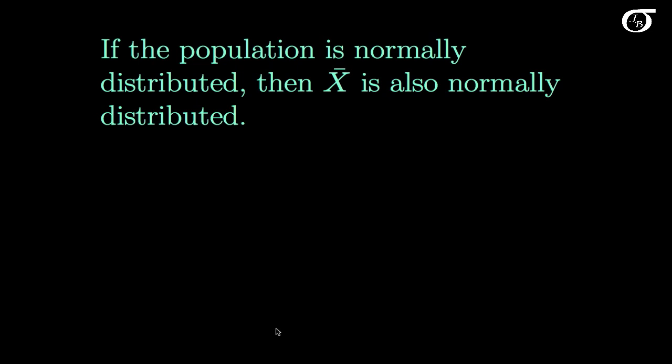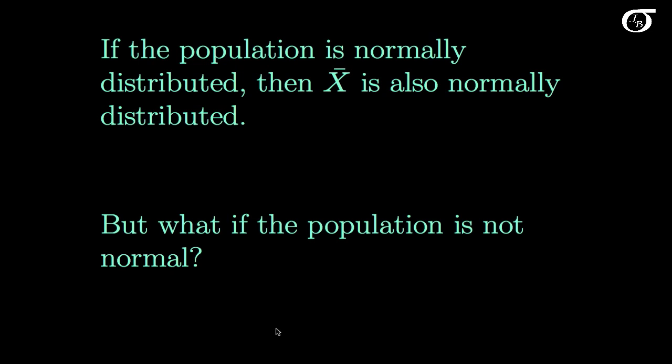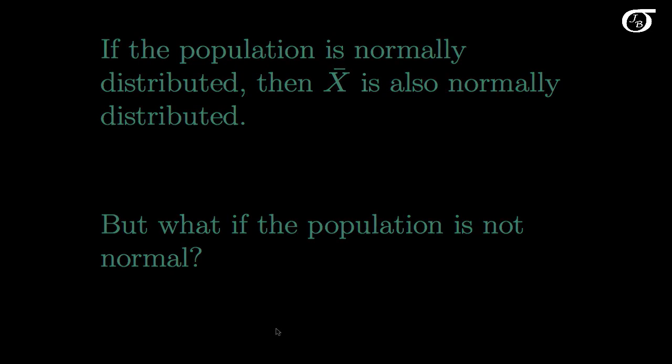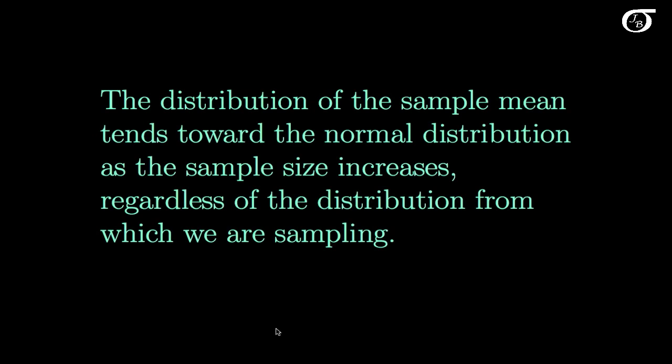This is important for us. But what if the population is not normal? This is where the central limit theorem really helps us out. The distribution of the sample mean tends toward the normal distribution as the sample size increases, regardless of the distribution from which we are sampling. So even if we are sampling from a non-normal distribution, the sampling distribution of X-bar is going to tend towards normal as the sample size increases.